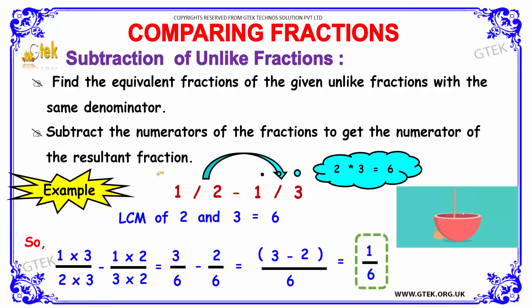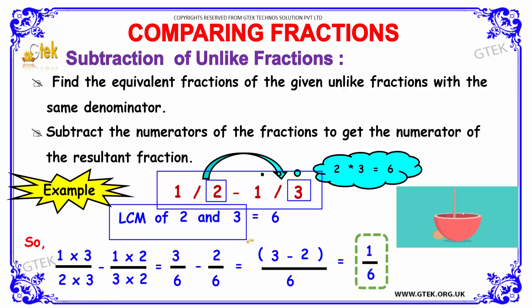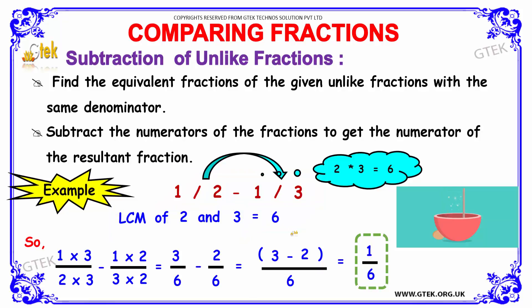The question is 1 divided by 2 minus 1 divided by 3. As with unlike fractions, we need to equate the denominator first. We find the LCM of 2 and 3, which is 6. To make the first denominator equal to 6, we multiply by 3, since 2 into 3 equals 6. For the second term, since we have 3, multiplying by 2 gives 3 into 2 equals 6.